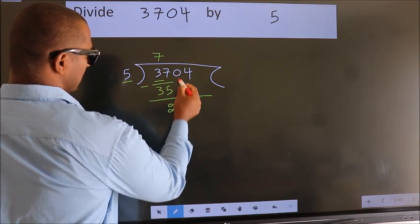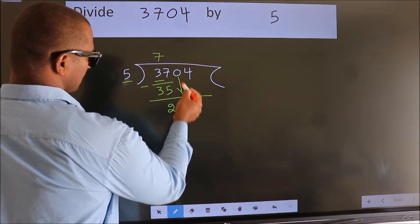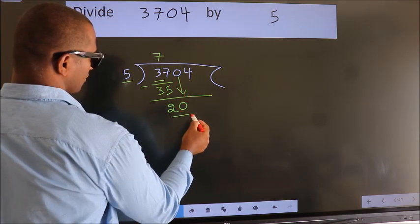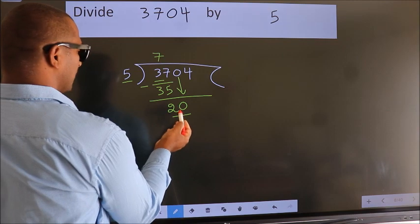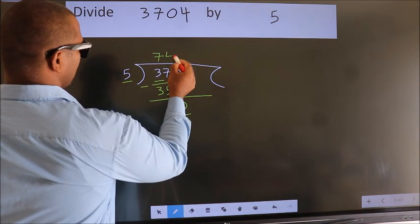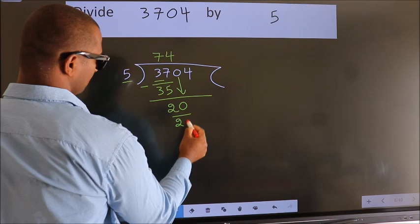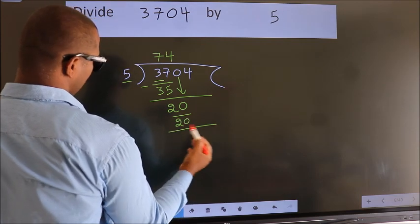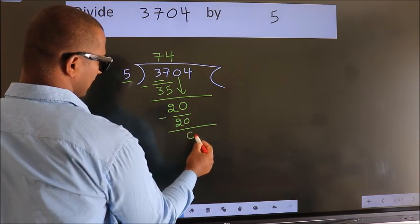After this, bring down the beside number. So 0 down. So 20. When do we get 20 in the 5 table? 5 times 4 is 20. Now we subtract. We get 0.